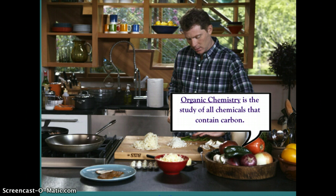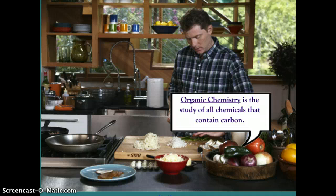Bobby has a wonderful tray of fruits and vegetables here, and those would be life forms — they came from plants. In coming from plants, that means they are probably made out of carbohydrates and maybe some proteins, maybe some fats, and all of those things contain carbon. When you're studying the chemistry of carbon molecules, you are studying organic chemistry.